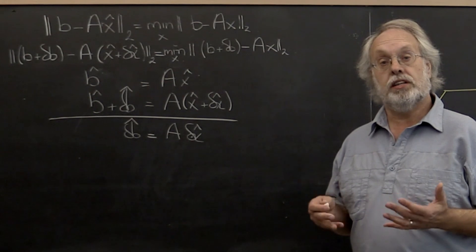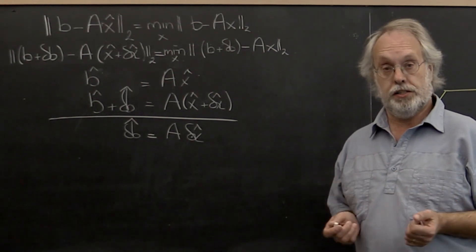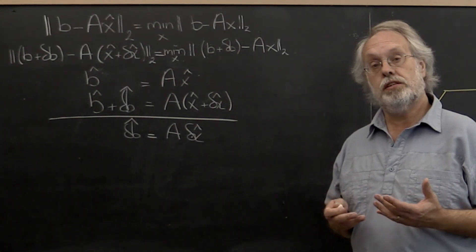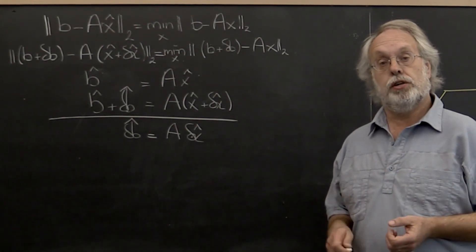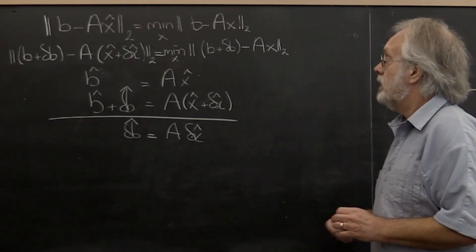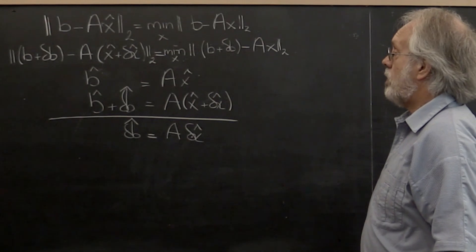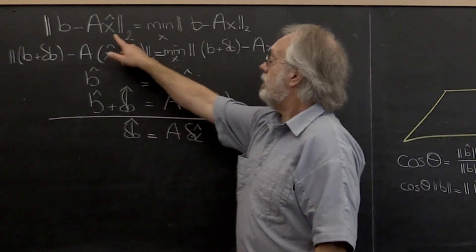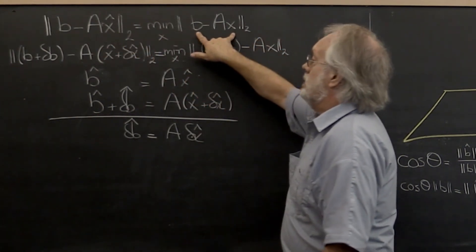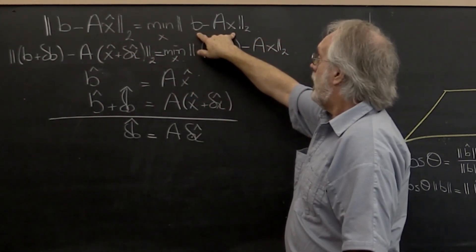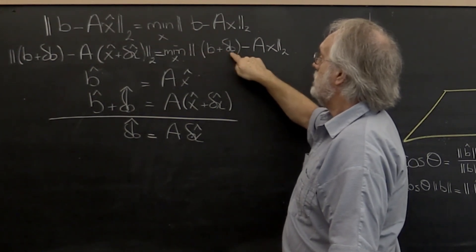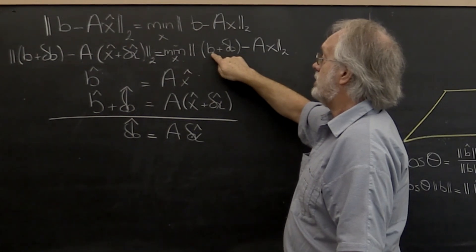Let's take a little side tour and look at the conditioning of the linear least squares problem. Remember, conditioning had to do with how sensitive the solution is to a small change in the right-hand side. Now in terms of the linear least squares problem, what does that mean? Well, we're looking for x-hat that minimizes this, and what we want to know is what happens if we make a minor change to the right-hand side vector b.